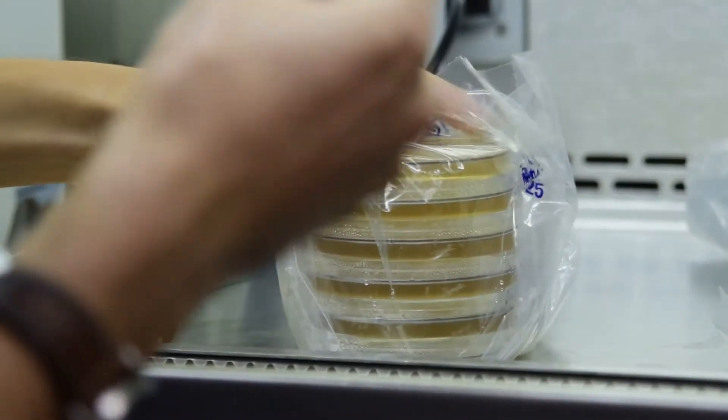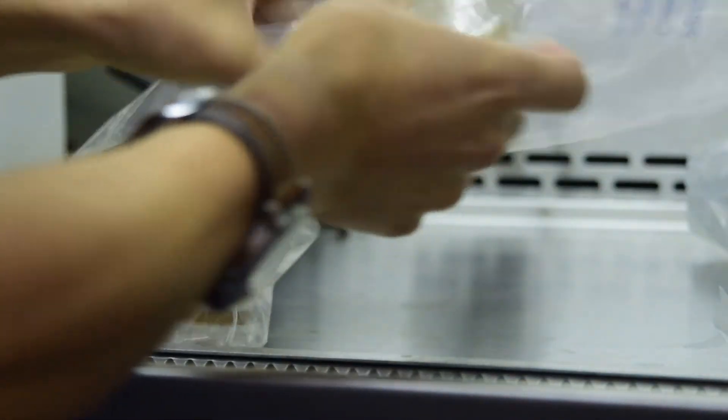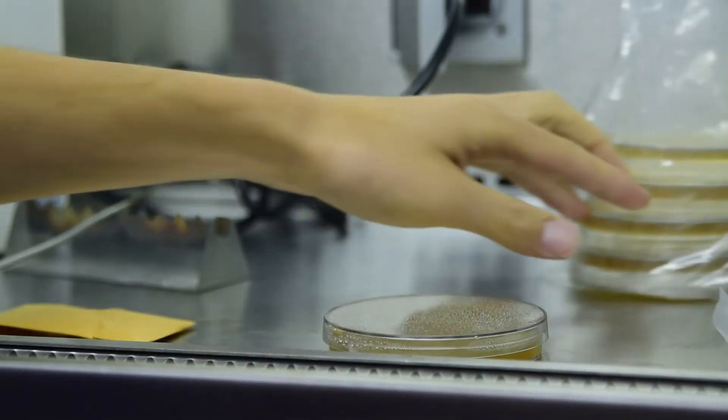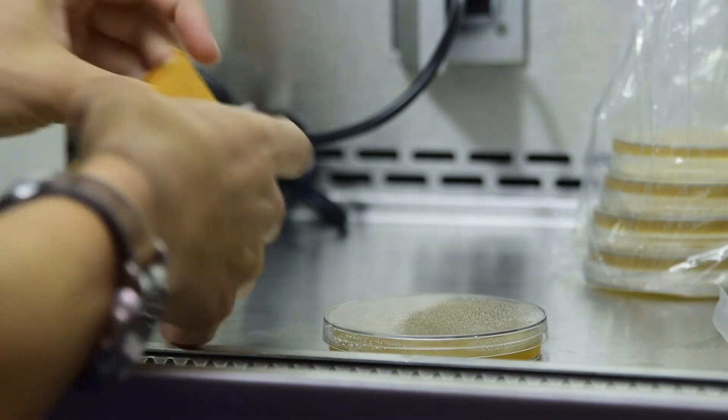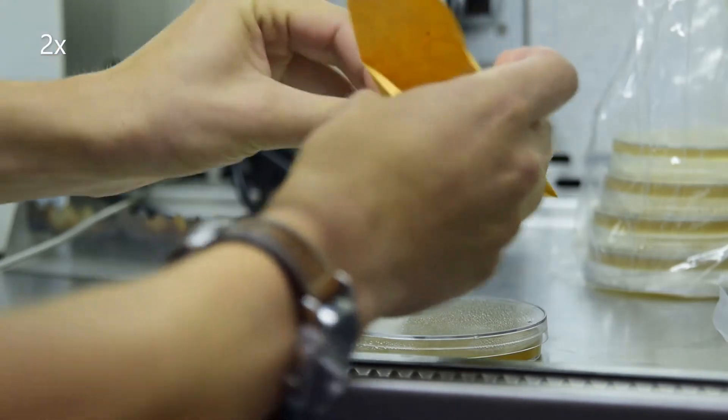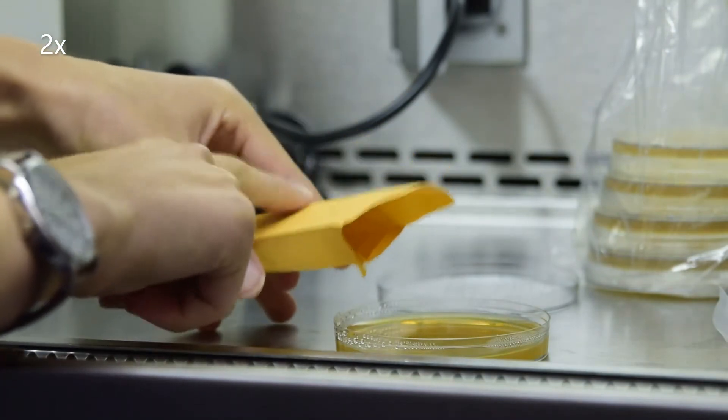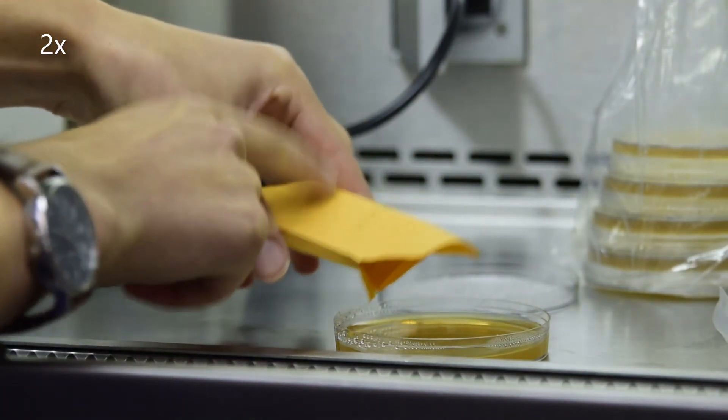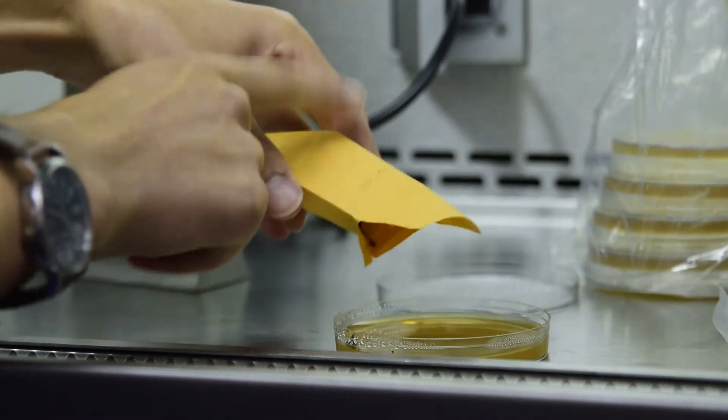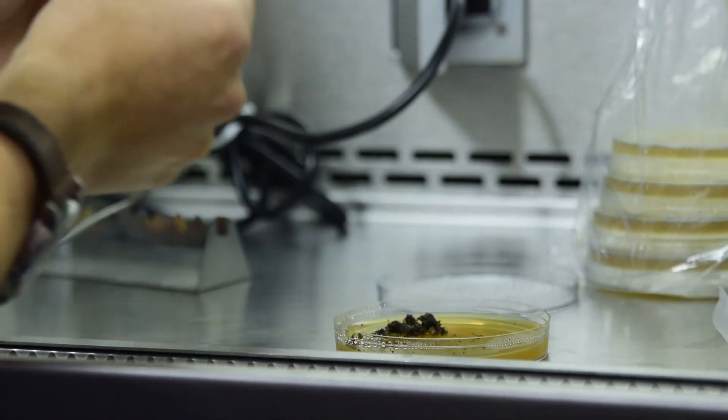The first plate is called a soil sprinkle plate. Open the soil sample envelope without touching the sample and shake some onto an antibiotic containing plate. Try to cover only a small area to allow the fungi to grow into the other areas without soil.